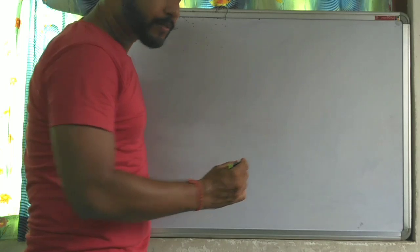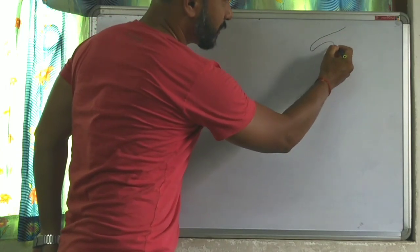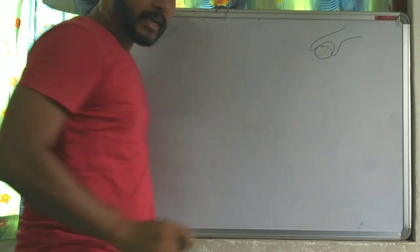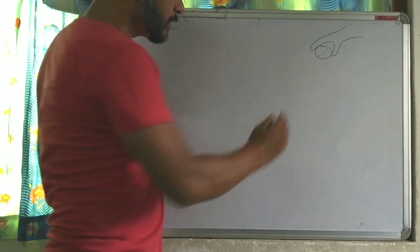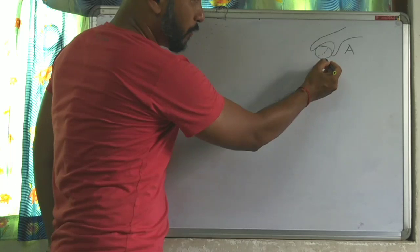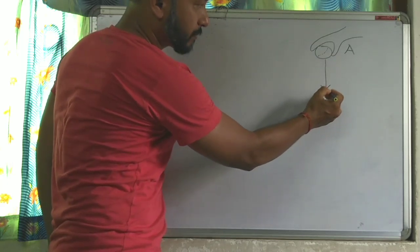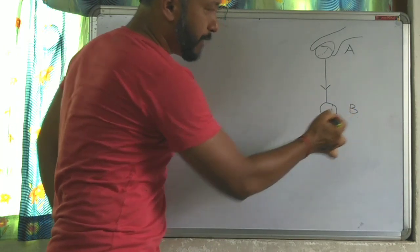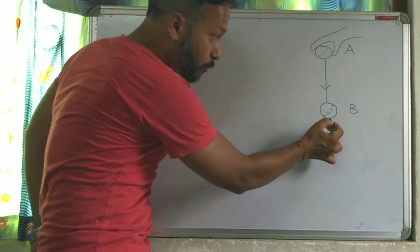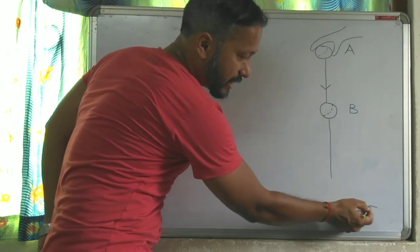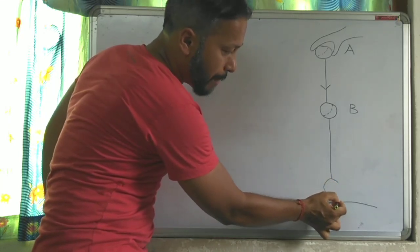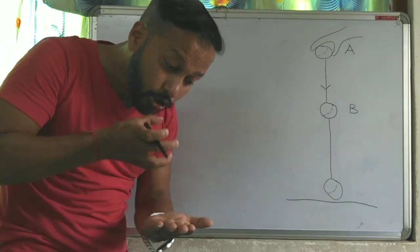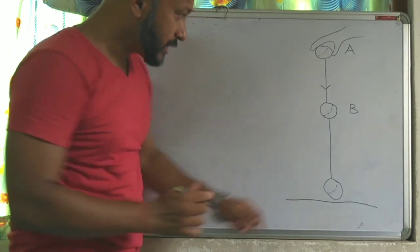Let us consider that this is your hand where you are holding the ball. This is the ball you are holding — say this point is A. From here, the ball is falling, and here is the position of the ball mid-fall — say this point is B. The ball continues falling and this is the ground where it is about to touch. It has not touched yet; it is just going to touch. Say this point is C.